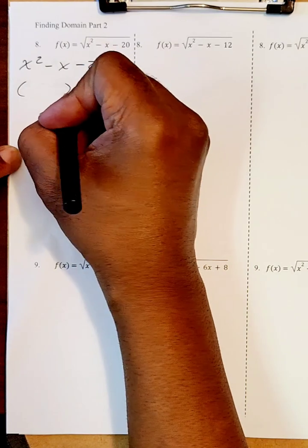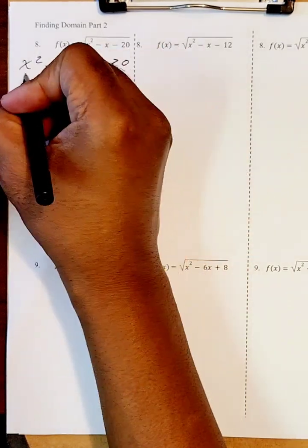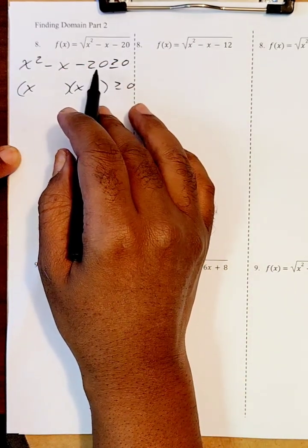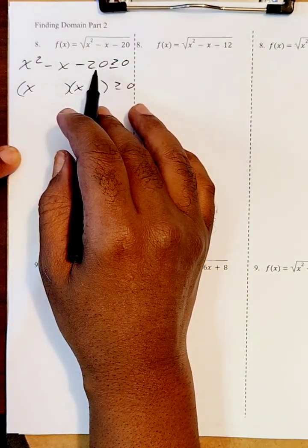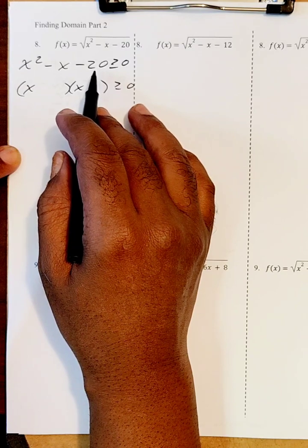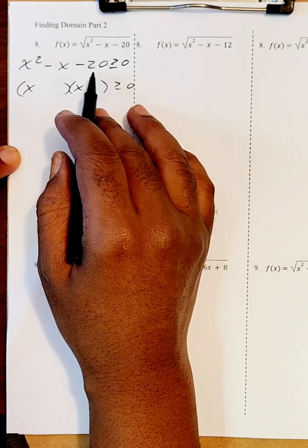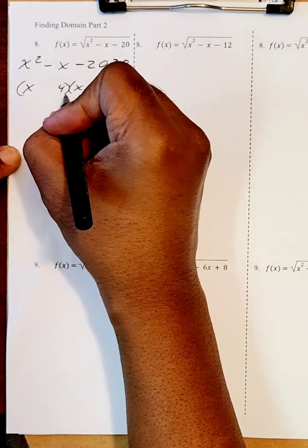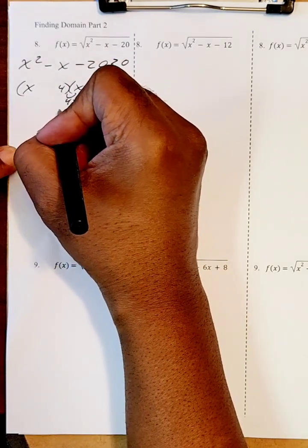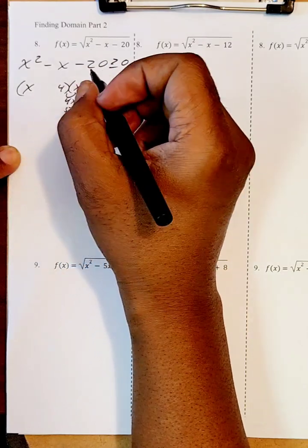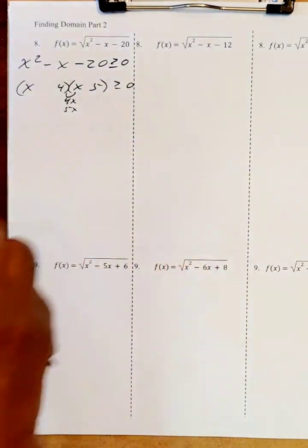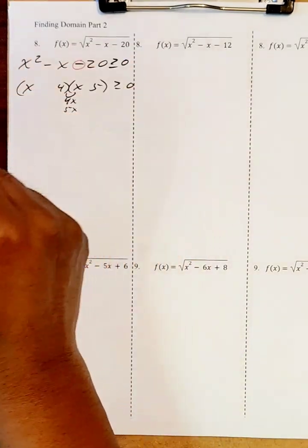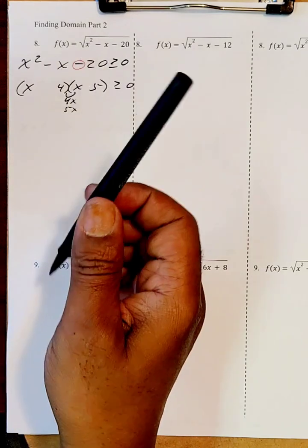We're going to break this into two binomials, so x squared breaks into x times x. I'm going to break 20 into a four times five. This will give me four x on the inside and five x on the outside. Now I have to use opposite numbers and get negative one for x.